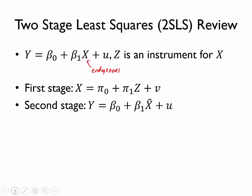We estimate a first stage where we regress the endogenous independent variable on the instrument z, and then we estimate a second stage where we replace the endogenous independent variable x with its predicted value x-hat from the first stage. We showed in the previous video that this corrects the bias as long as z is a valid instrument for x.